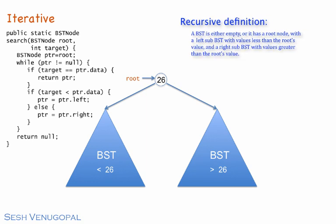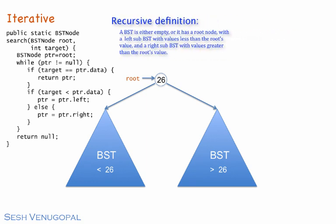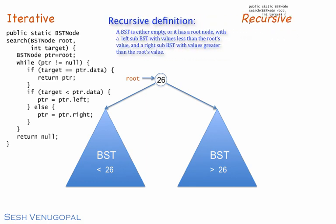The parameter to the method is the root of the sub BST that is being searched, which initially starts out at the root of the entire tree. In the method, we pretty much follow the recursive definition.